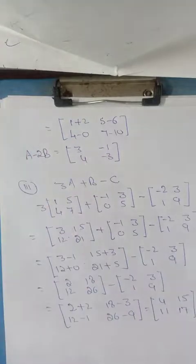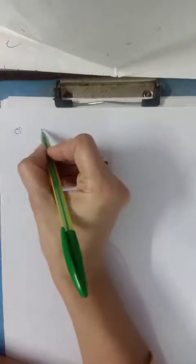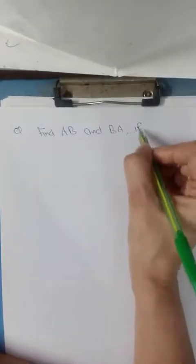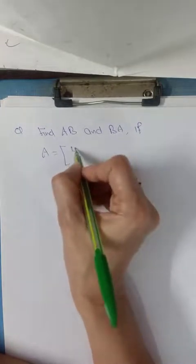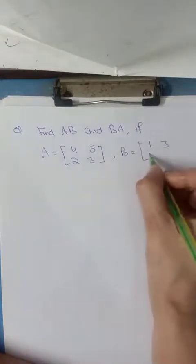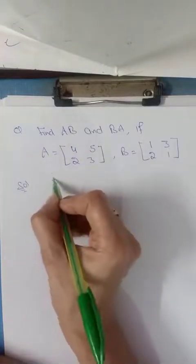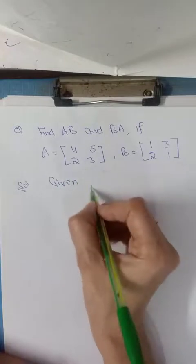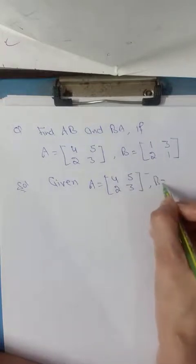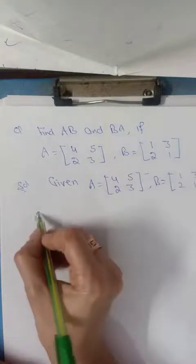Now next we have multiplication. Addition or subtraction is simpler: corresponding elements are added or subtracted. Find AB and BA if matrix A equals to 4, 5, 2, 3, and matrix B is 1, 3, 2, 1. I have told you that matrices AB is not equal to BA 99% of the time.